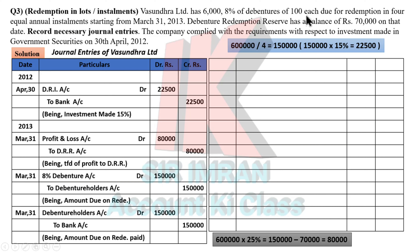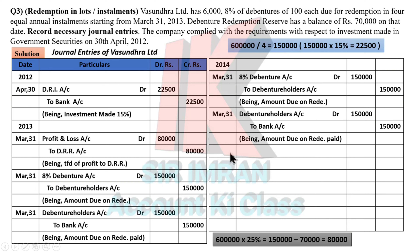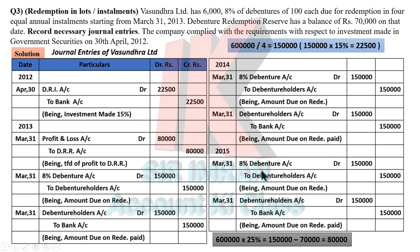If the 25% was not covered, you'd need DRR entries in the 3rd and 4th years. But here 25% is covered at the start, so no further DRR entries are needed — you simply pass the two debenture payment entries directly. Debenture to Debenture Holder (due), and Debenture Holder to Bank (paid). The year changes from 2013 to 2014, and so on for the second installment.